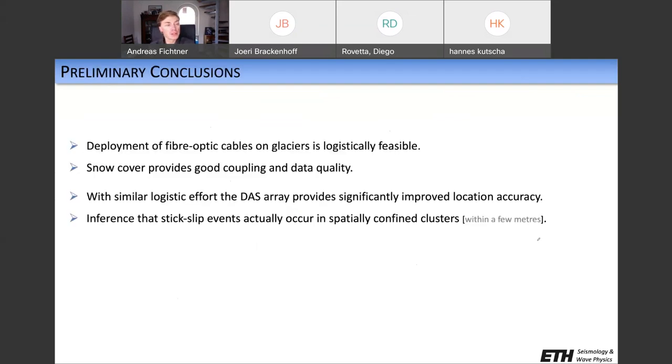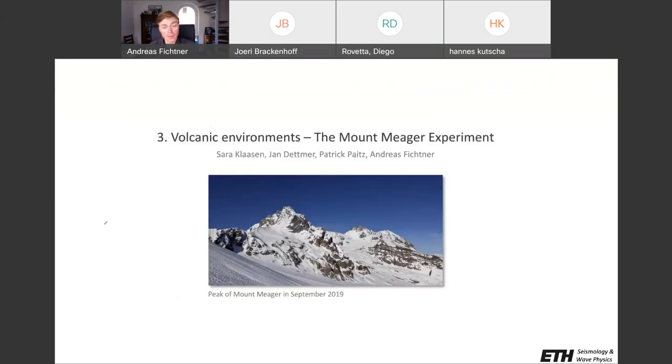And what the DAS array allows us is, thanks to this high location accuracy, actually infer that all of those ice quakes happen in more or less the same region. So, they all belong to the same slip patch. And they also exhibit slip roughly in the direction of the overall flow. So, some preliminary conclusions here. What we have seen, and this is logistically important, is that the deployment of fiber optic cables on glaciers is actually quite easy. And that just covering it with a little bit of snow provides good coupling and data quality that can compete with the seismometer recordings. With a similar logistic effort, basically one hour of work, the DAS array provides greatly improved location accuracy. And thereby, it allows the inference that all of those stick-slip earthquakes that we recorded actually occurred in the same cluster within a few meters.